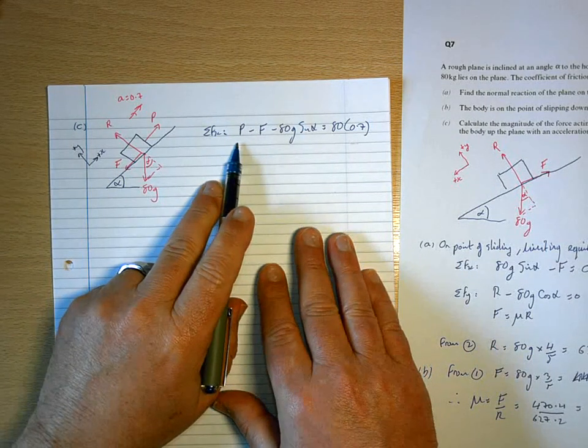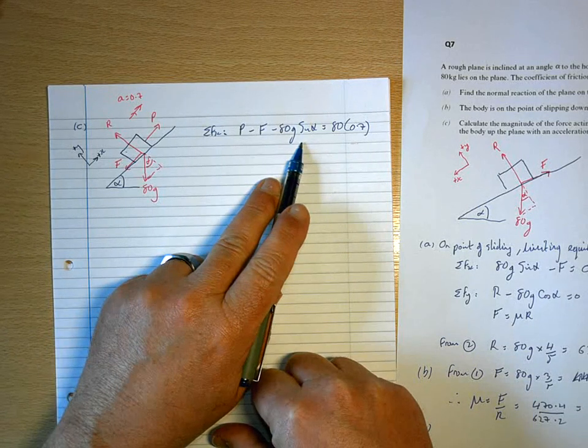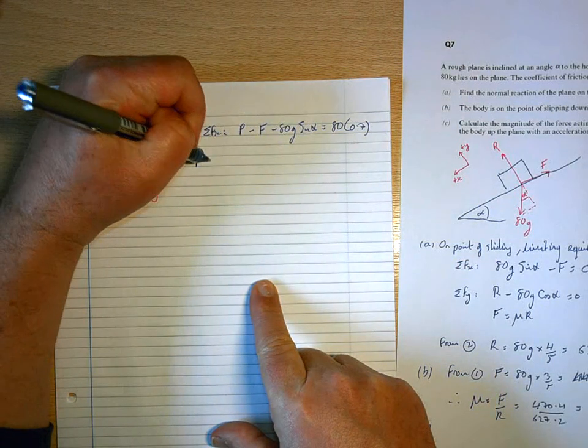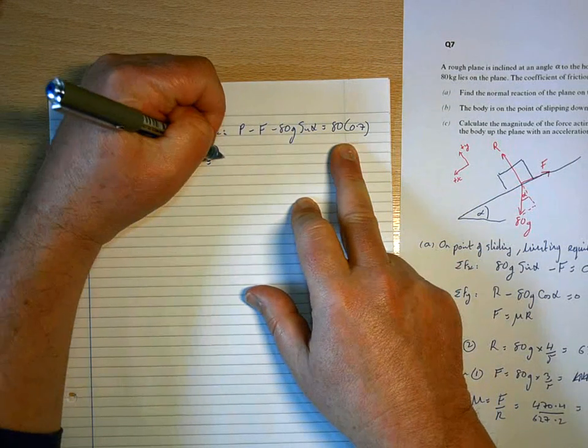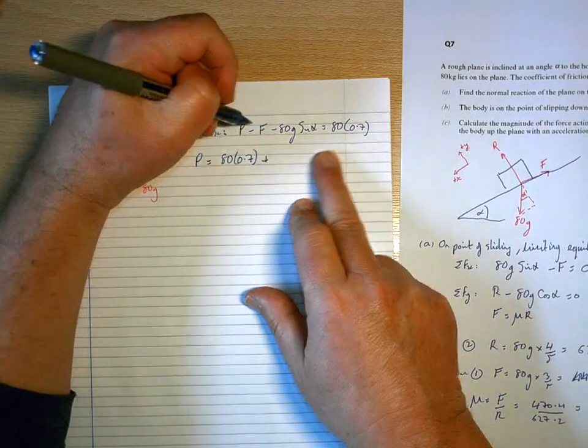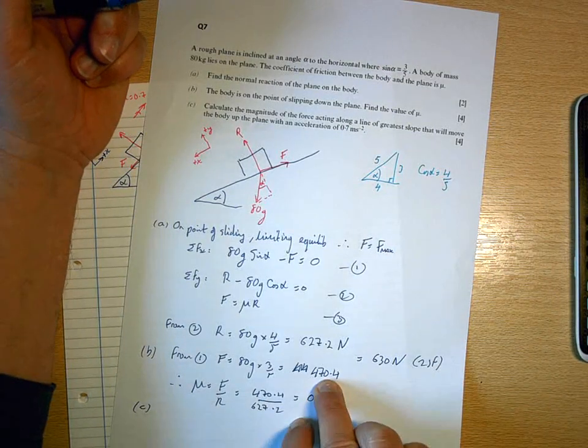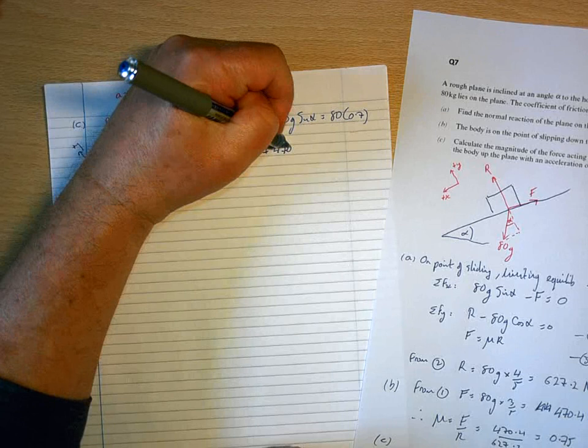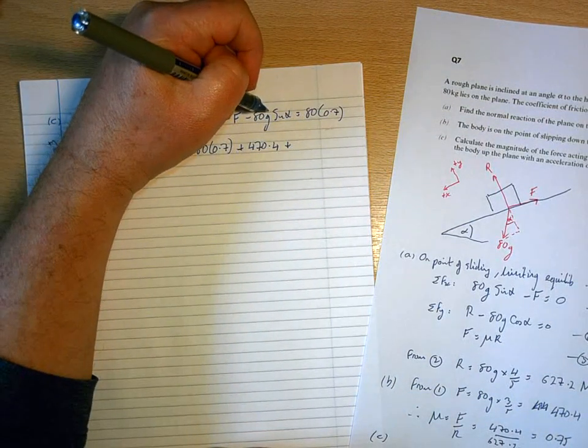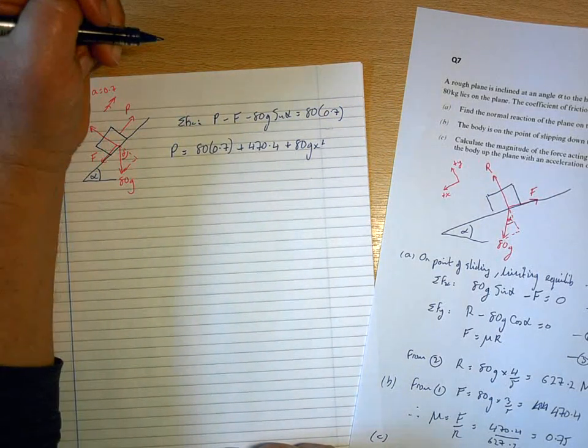Within that equation, I know what f is - I've worked it out before, it's 470.4. I know what alpha is, so I've got everything I need there to work out what P is. So P would be 80 times 0.7 plus f, which is at its maximum, 470.4, plus 80g sine alpha, and sine alpha is three-fifths.